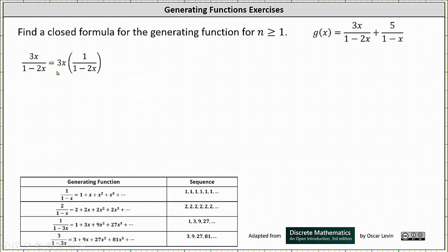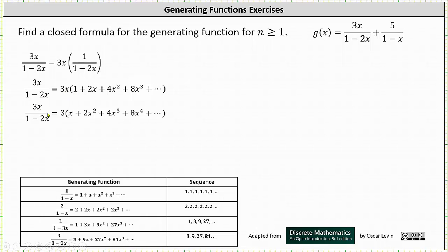Performing this substitution gives us 3x times the quantity 1 plus 2x plus 4x squared plus 8x cubed plus dot dot dot. Now from here, we would normally distribute the 3x, but in this case let's just distribute the x. This will help us determine the formula later. Distributing just the x, we have 3 times the quantity x plus 2x squared plus 4x cubed plus 8x to the fourth plus dot dot dot.